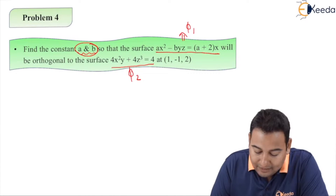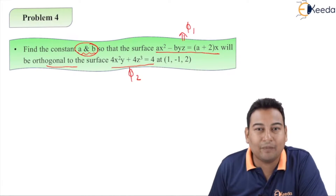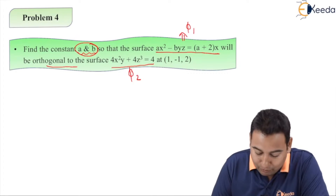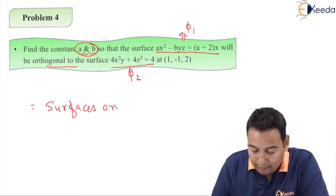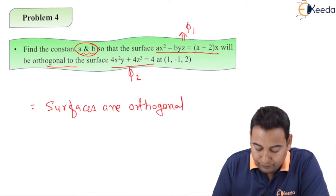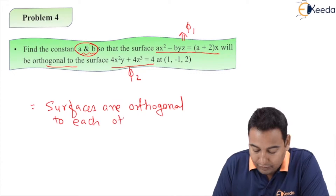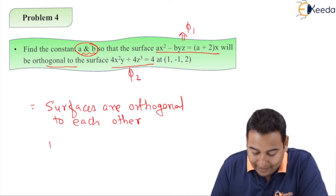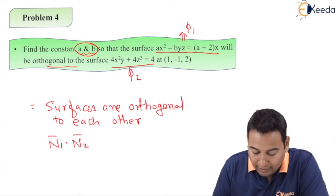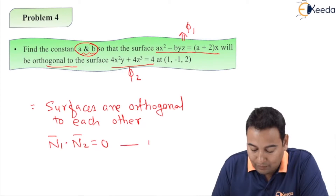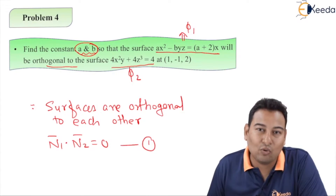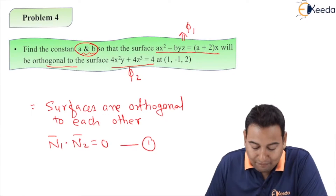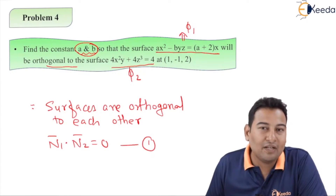The first condition is surfaces are orthogonal to each other. As discussed in video number one, since surfaces are orthogonal to each other, this simply indicates n1 bar dot n2 bar is equal to zero. We have derived this in video number one. This is the meaning when the surfaces are orthogonal to each other.